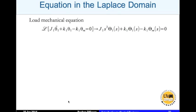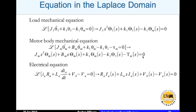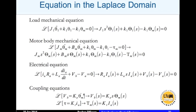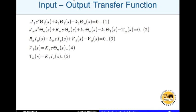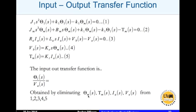Taking the Laplace transform of all equations — with zero initial conditions — we get the Laplace-domain versions of the load mechanical equation, the motor body mechanical equation, the electrical equation, and the coupling equations. These are equations 1 through 5 in the Laplace domain. Our goal is to find the input-output transfer function between theta_1 and VA by eliminating all unwanted variables: theta_m, tau_m, I_a, and VB from equations 1 to 5.